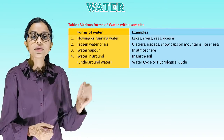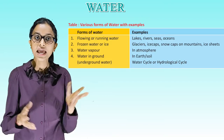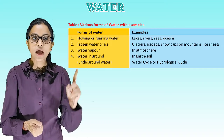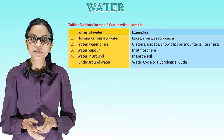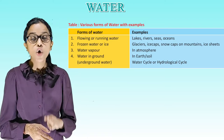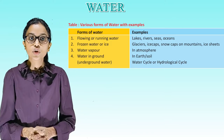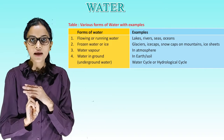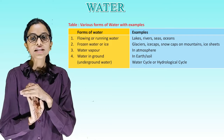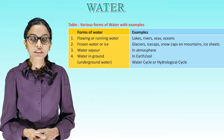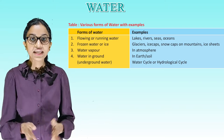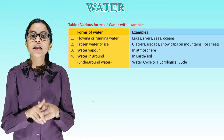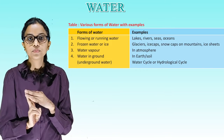This table is showing various forms of water with examples. Forms of water and examples: 1. Flowing or running water — lakes, rivers, seas, oceans. 2. Frozen water or ice — glaciers, ice caps, snow caps on mountains, ice sheets. 3. Water vapor — in the atmosphere. Water in the ground — underground water, in earth or soil.